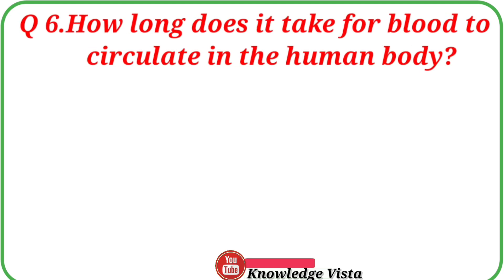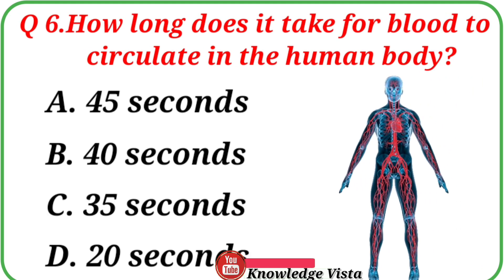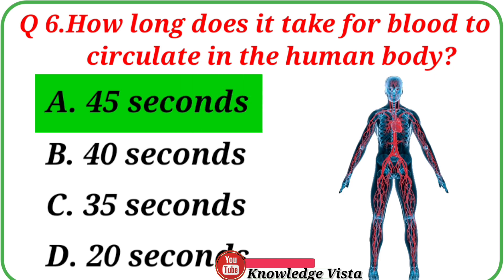Question No. 6: How long does it take for blood to circulate in the human body? Your options are: A. 45 seconds, B. 40 seconds, C. 35 seconds, D. 20 seconds. Correct answer is Option A, 45 seconds.